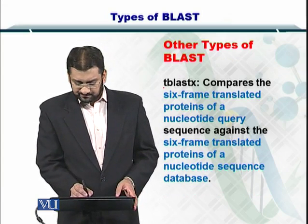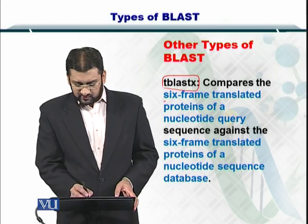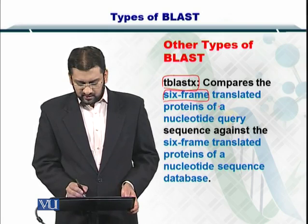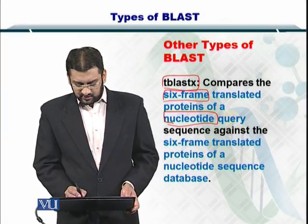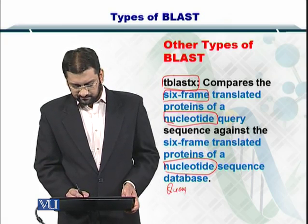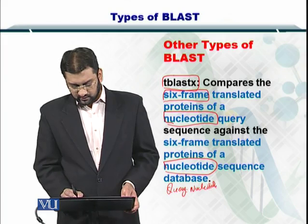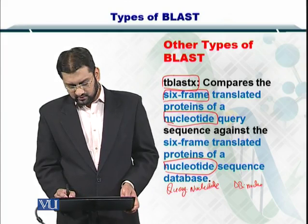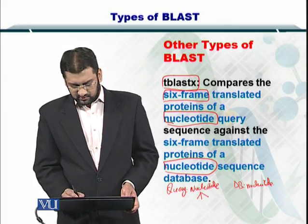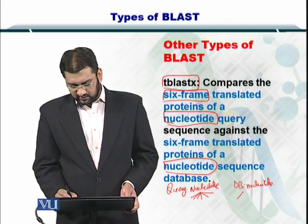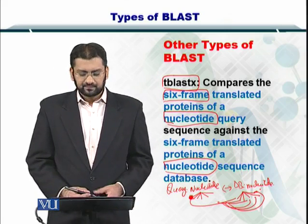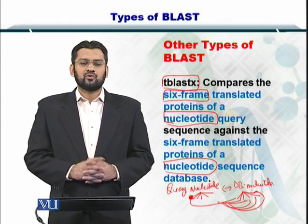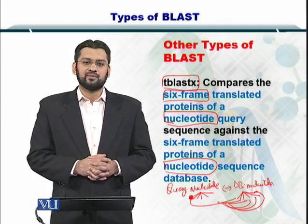Next, you have TBLASTX. It compares the six open reading frames translated from a nucleotide query against a six-frame translated protein of a nucleotide database. So your query is nucleotide and your database is also a nucleotide database. All you are doing is creating the six ORFs and then comparing them with the six ORFs from the database. Each ORF is compared against all six possibilities and then the BLAST is completed. This involves a lot more computation as compared to a simple BLASTN or BLASTP.